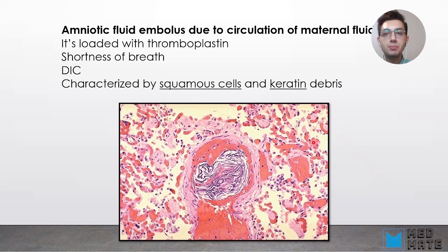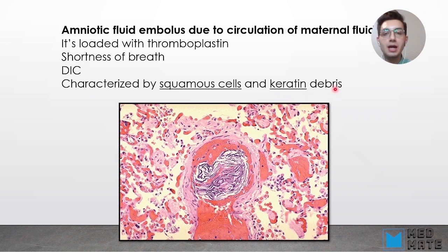Another type is amniotic fluid embolism, due to circulation of amniotic fluid. Amniotic fluid is loaded with thromboplastin, which can cause thrombus formation. Common symptoms are shortness of breath and DIC. It is characterized by squamous cells and keratin debris, because amniotic fluid contains keratin and squamous cells from the baby — as the baby forms skin, those cells peel off into the fluid. You can see the keratin debris here in this amniotic fluid embolism.